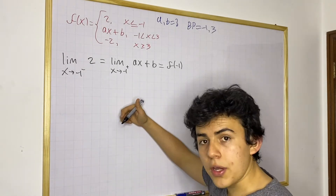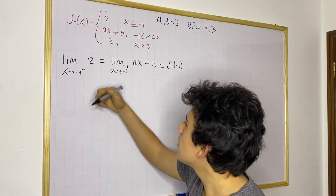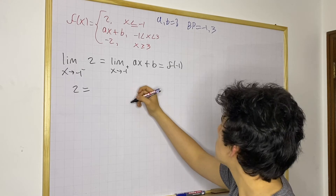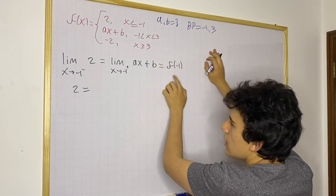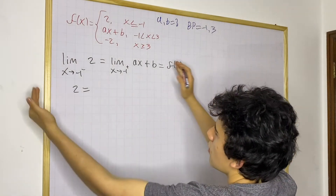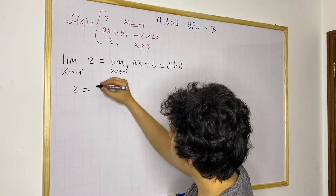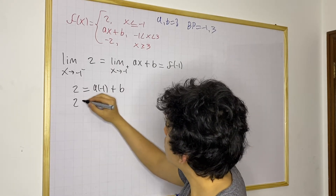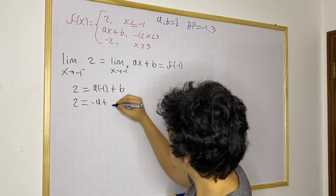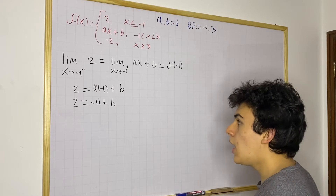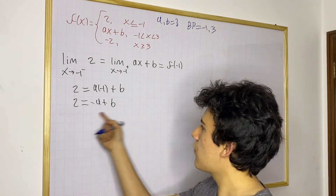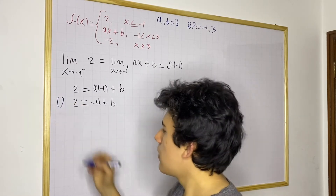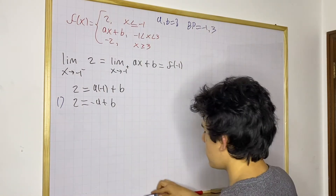Now let's solve those limits and see what equations we get. This limit equals 2, and for the right-side limit we plug in minus 1 into the linear function: a times minus 1 plus b. So we get 2 equals minus a plus b. This is our first equation relating a and b.